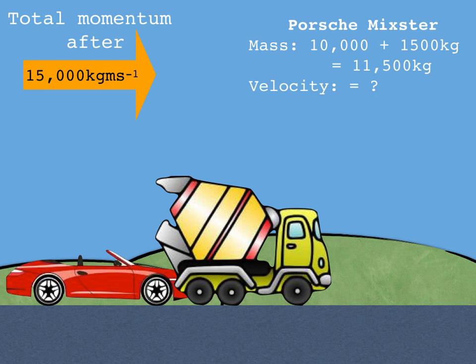And it's made up of the Porsche giving 1500 kg and the cement mixer giving 10,000 kg. So there's a total mass of 11,500 kg. Now we need to work out the velocity and if we rearrange the momentum equation well velocity is just momentum divided by mass.